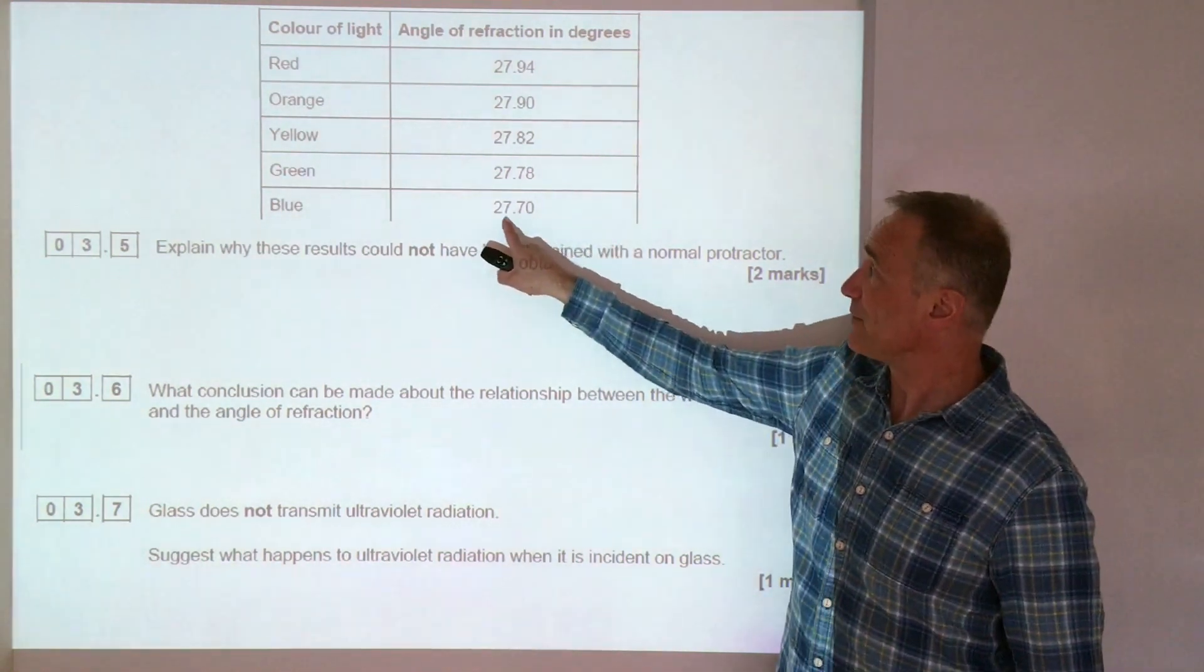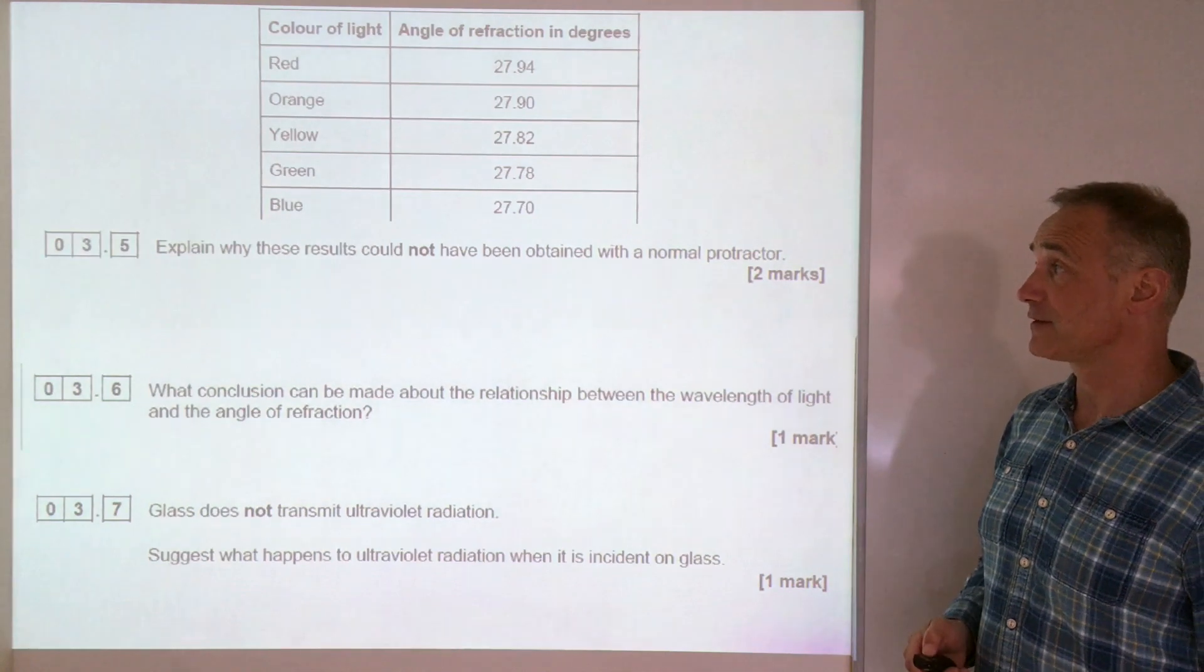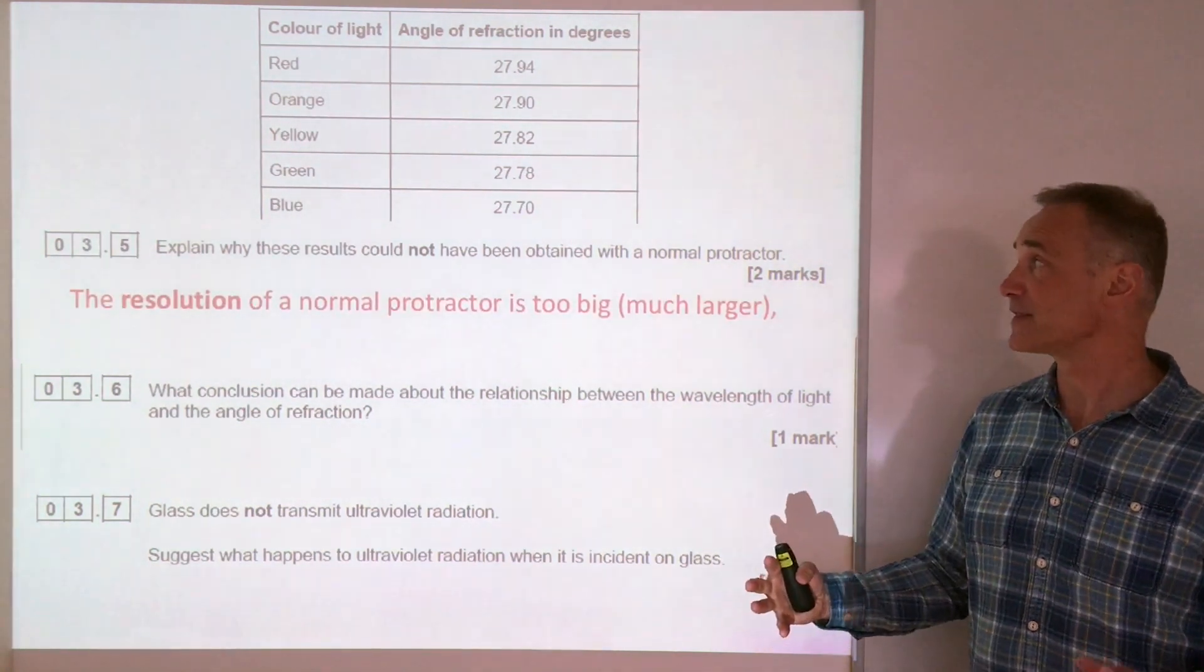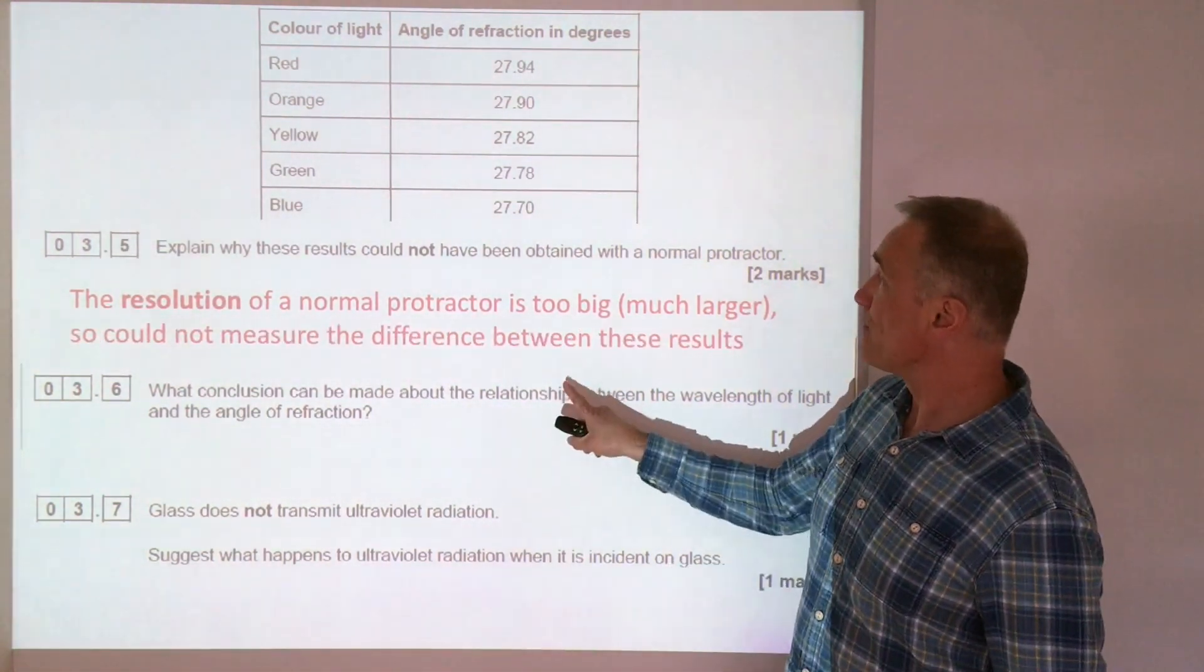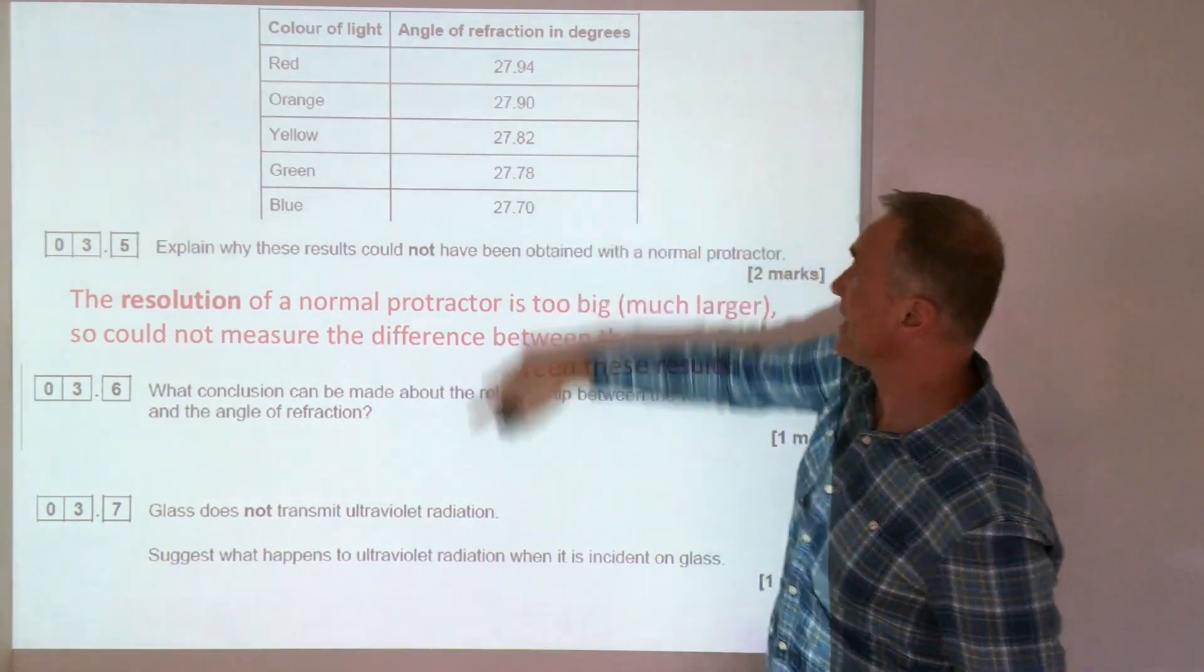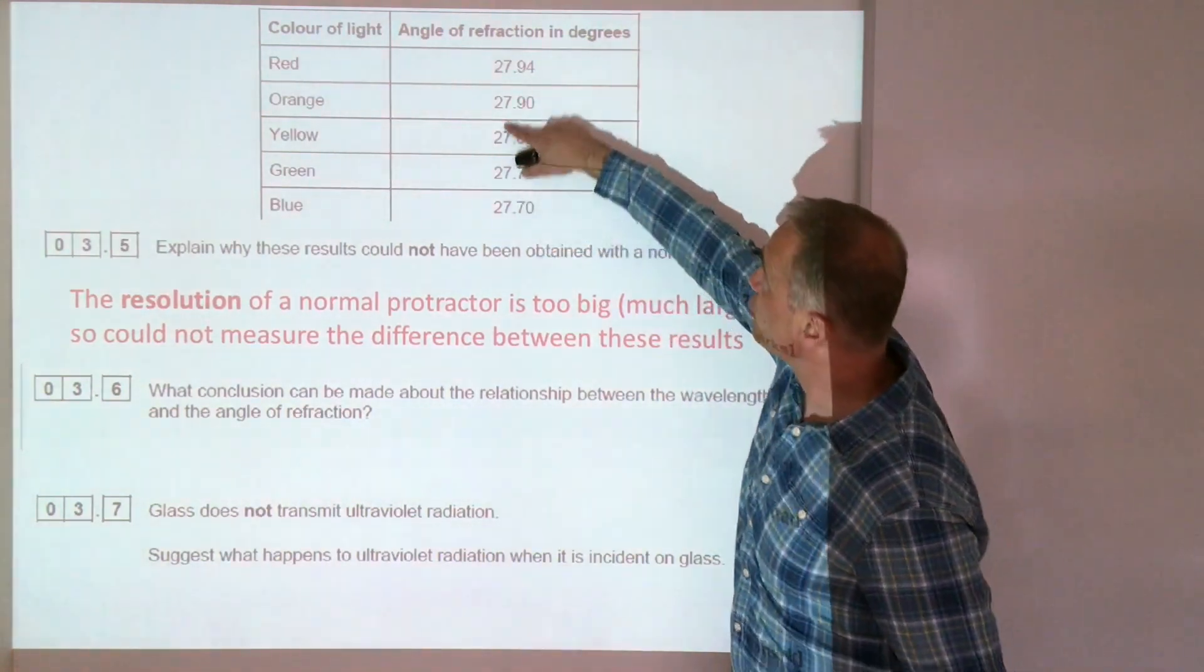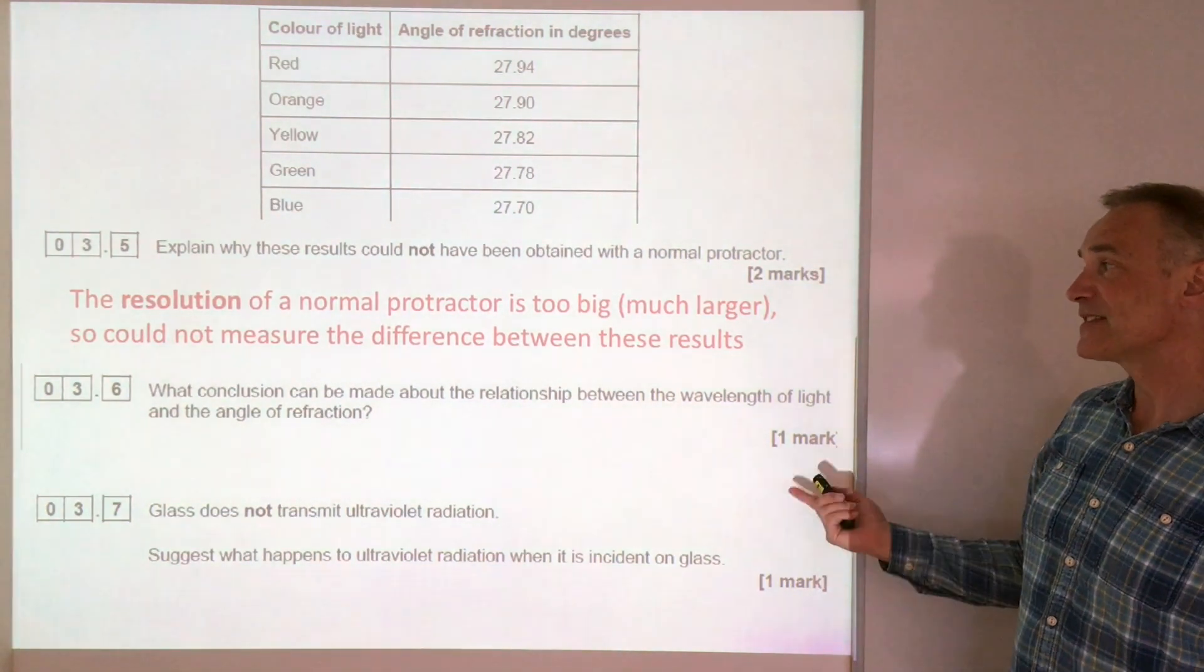Now, if you have a look carefully, protractors have a resolution, that's the key term we need to use, which is much much bigger. So that's our first point out of two, which means that it can't measure the difference between these because there is hardly any difference between them. It can only measure to the nearest degree, a normal protractor, so it wouldn't show any difference between them.